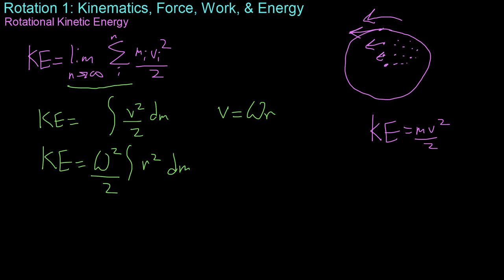Now, we're going to define this quantity, integral of r squared dm, as I. And I is what is known as the rotational inertia of an object, sometimes called its moment of inertia as well.